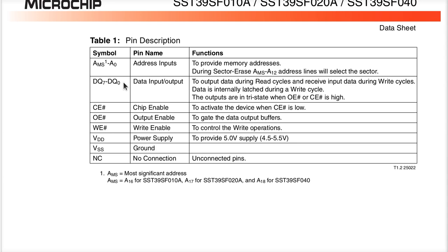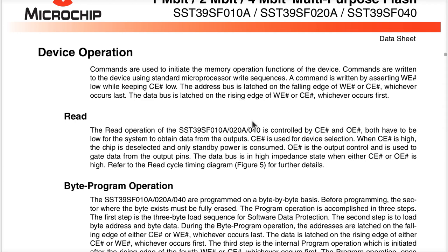When we write a byte to the flash chip, we're sending a byte to the chip — but that doesn't mean we've programmed that byte into the flash. There's a two-way dialogue between the programming device and the flash chip. We'll be writing data into the flash and having a conversation with it in order to get it programmed. So writing data into the flash and programming a byte into flash memory are two distinct operations.